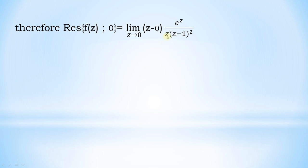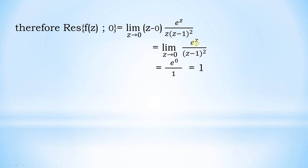Here z cancels, so we get the limit as z tends to 0 of e^z divided by (z−1)². Now apply the limit by replacing z = 0: the numerator is e^0 and the denominator is (0−1)² = 1. So the residue of f(z) at 0 equals 1.